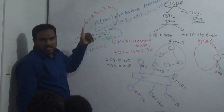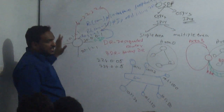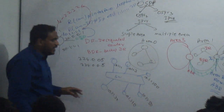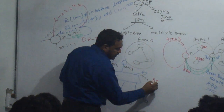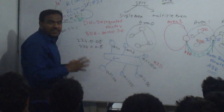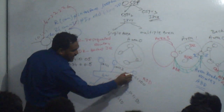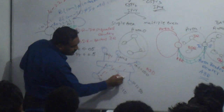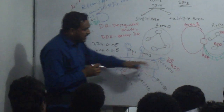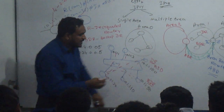The router ID is determined by the highest active port or, if present, the highest logical (loopback) interface. After the election, the router with the highest router ID — say, the one with address 100 — becomes the DR. All other routers send their updates to both the DR (using 224.0.0.5) and the BDR. The router with the second highest router ID, for example 50, becomes the BDR.